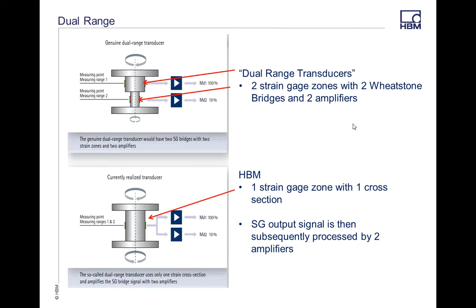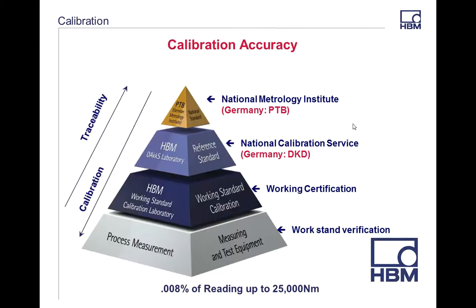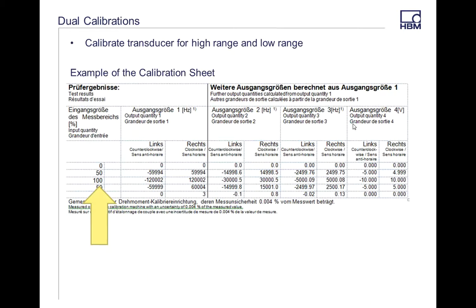So how does this work? If you want to do a dual range on our torque transducers, what you end up doing is you do two separate calibrations. You do one calibration for the full range, and then you do one calibration for the smaller range that you would like. If you wanted a thousand newton meter torque transducer set up to, say 100, you would do two cals. You would do one cal at the 100%, and then the other one at the lower percent.